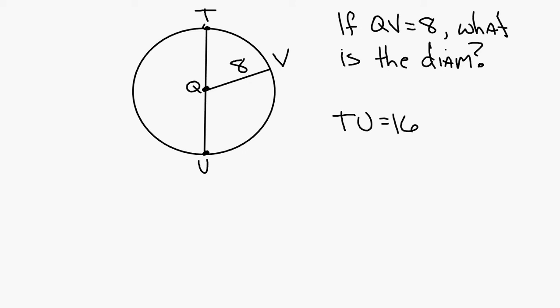Another question. If T to U equals 20, what is QV equal to? If T to U is 20, then Q to V equals 10. Tough stuff right here, isn't it?